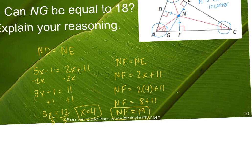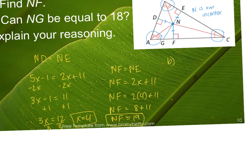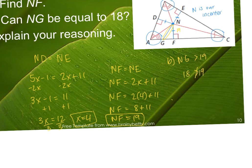Part B asks: can Ng be equal to 18? Nf is the shortest distance from point N to line segment AC, and notice that point G lies on AC. There is no way Ng could equal 18, because Nf is already 19. For Ng to be 18, G could not be on AC — because the shortest distance is 19, Ng has to be greater than 19. Since 18 is not greater than 19, Ng cannot be 18.